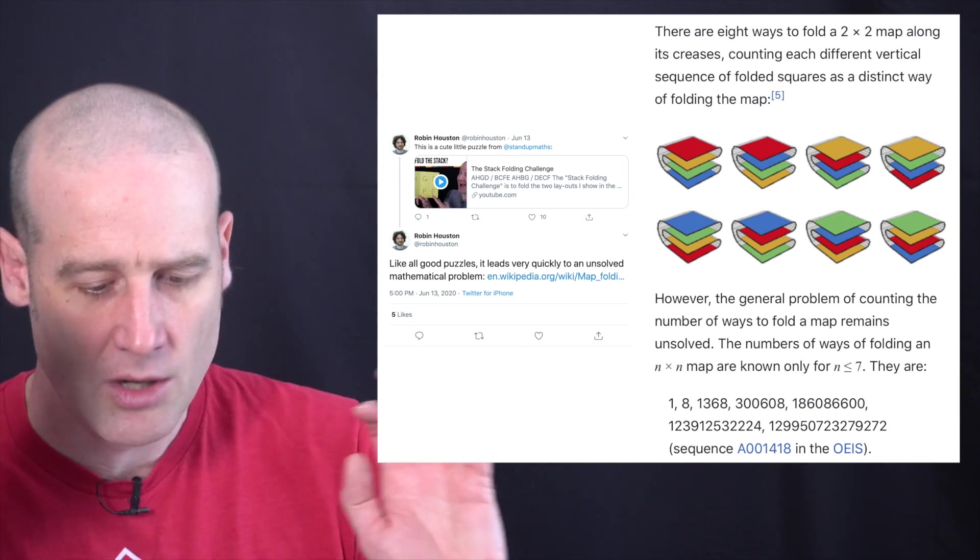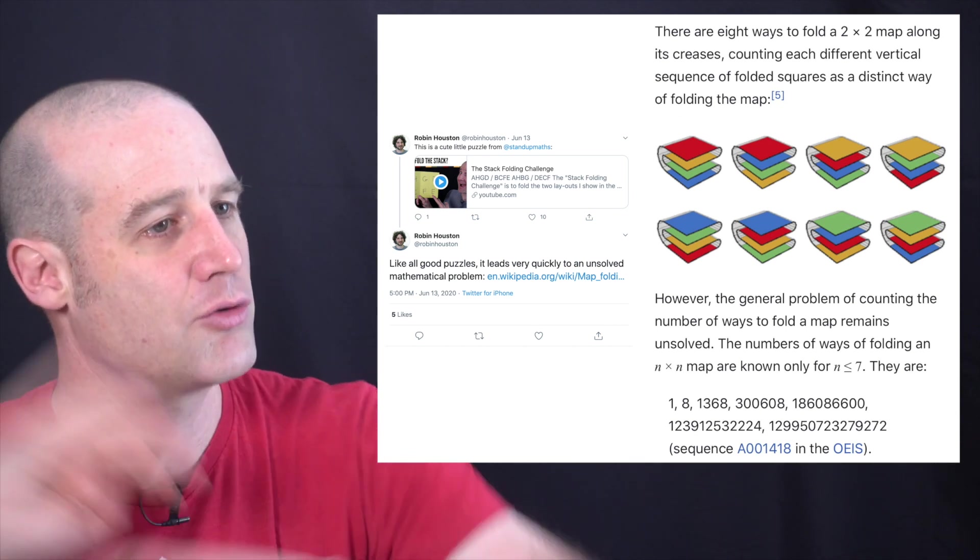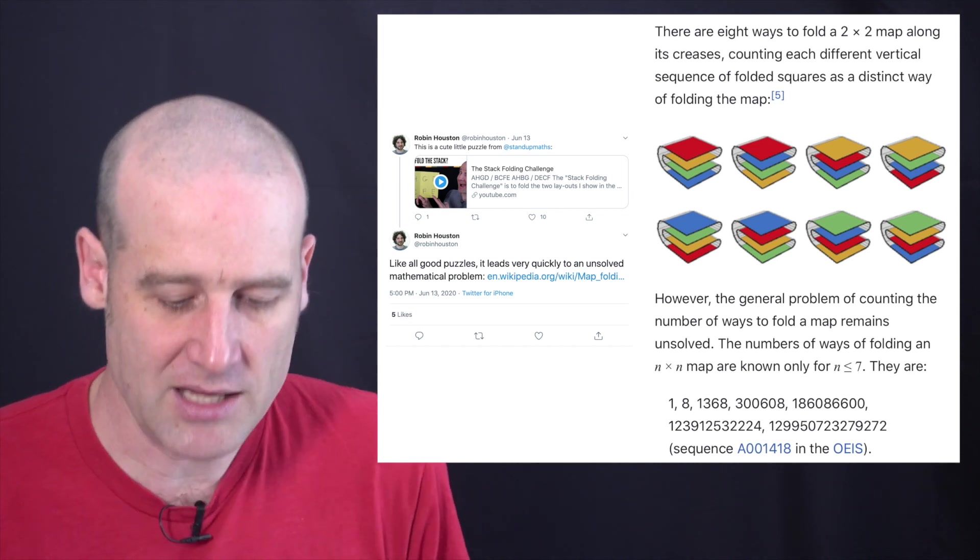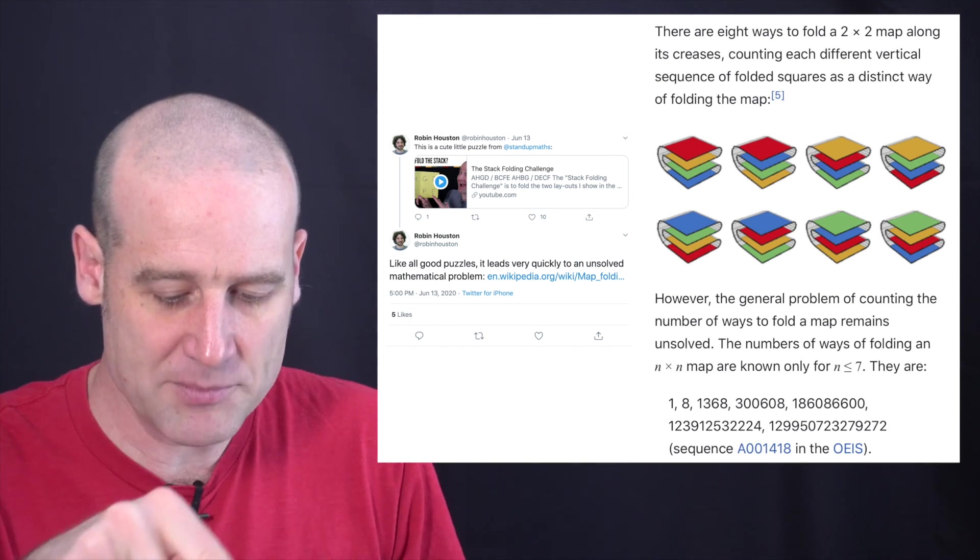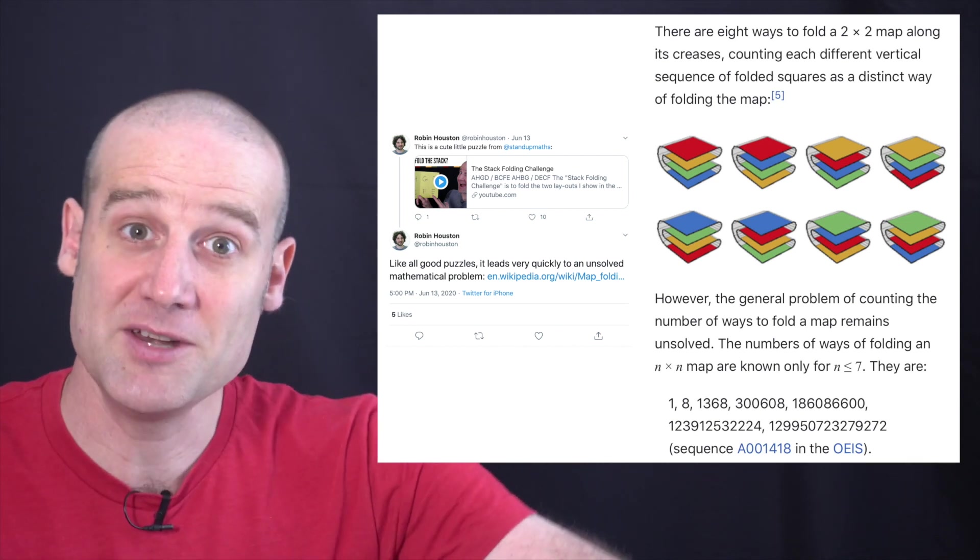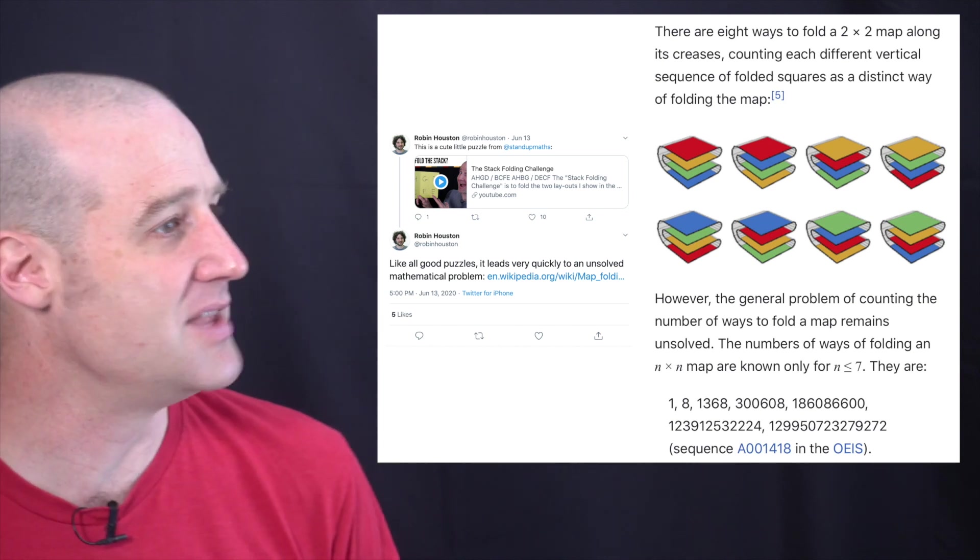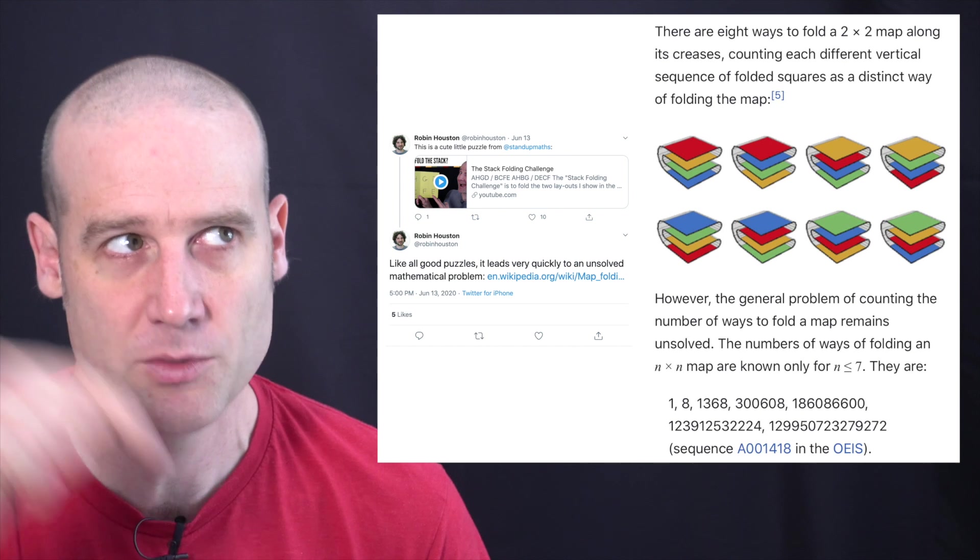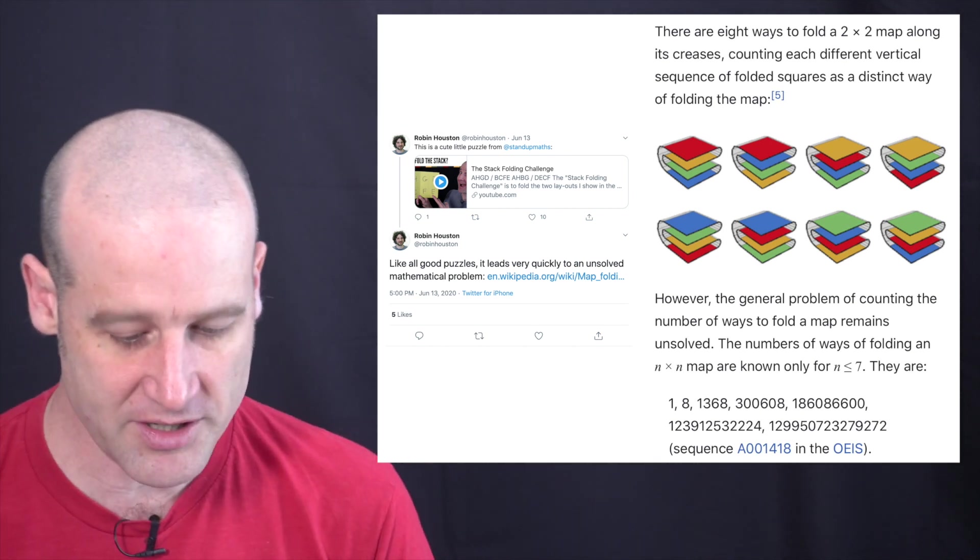And that's just the number of ways that you can fold up one of these bits of paper. So ignore the letters, ignore what I insisted was on the top. If you throw away that and just generalize it completely you get the map folding problem. And we do not know for maps greater than seven by seven, if they're a square arrangement, how many ways you can fold them up. Isn't that crazy?